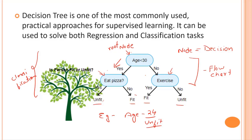When new data is passed in, it runs completely through the entire tree by answering true or false questions at each node until it reaches a leaf node. At each node — for example, eat pizza — if true it moves one way, if false it moves the other. The final prediction is the average of the values of the dependent variable in that particular leaf node, and through multiple iterations the tree is able to predict a proper value.